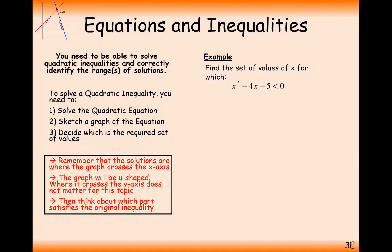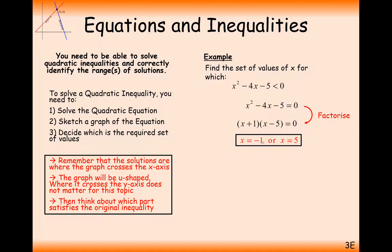Let's go through an example. We want x squared minus 4x minus 5 to be less than 0. The first thing we need to do is solve the quadratic equation — turn the inequality into an equals sign and solve. We can do this by factorising and then solving to find the roots of the equation, giving us x equals minus 1 and x equals 5.